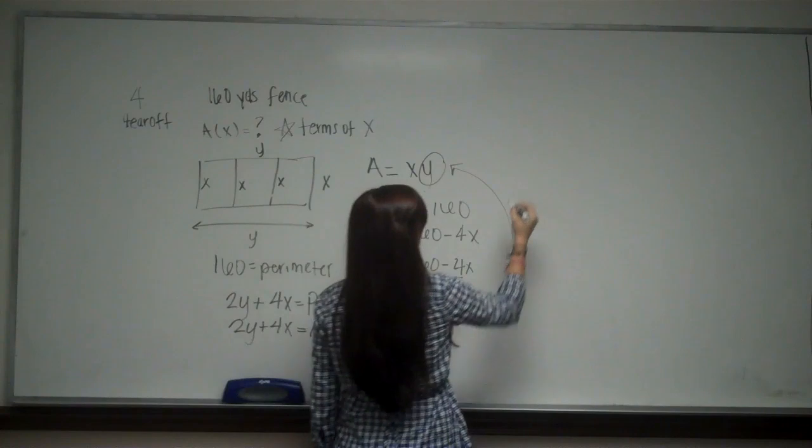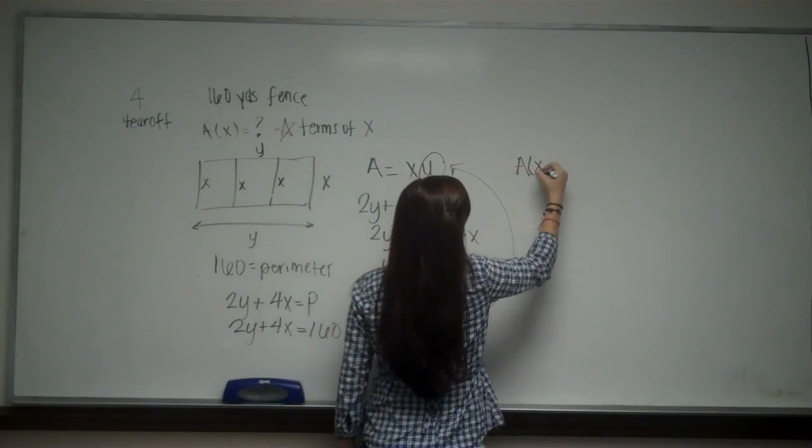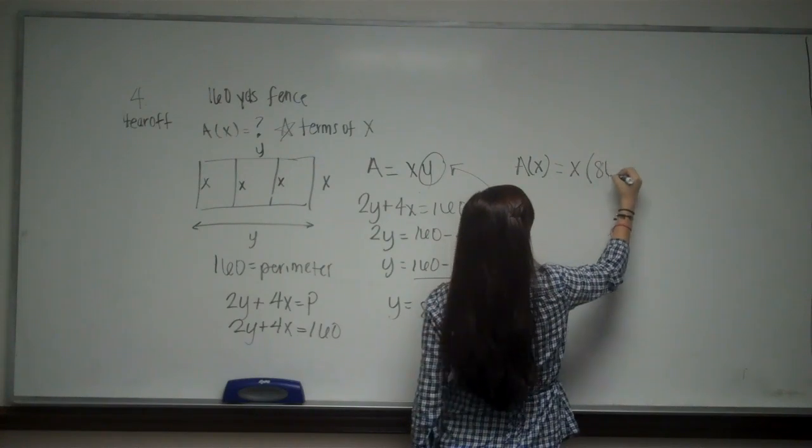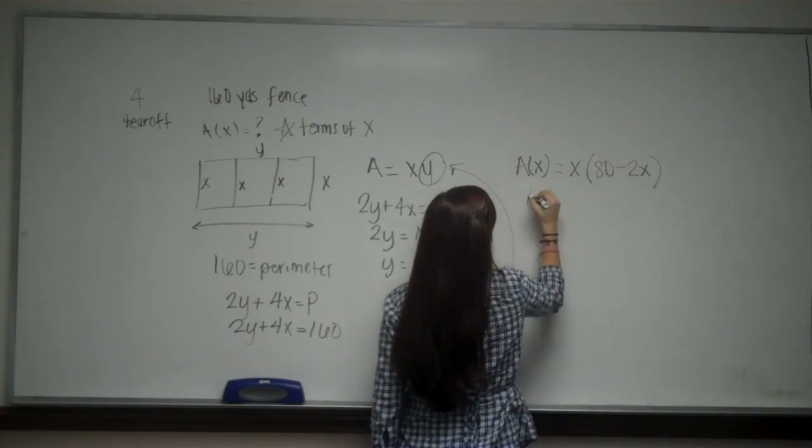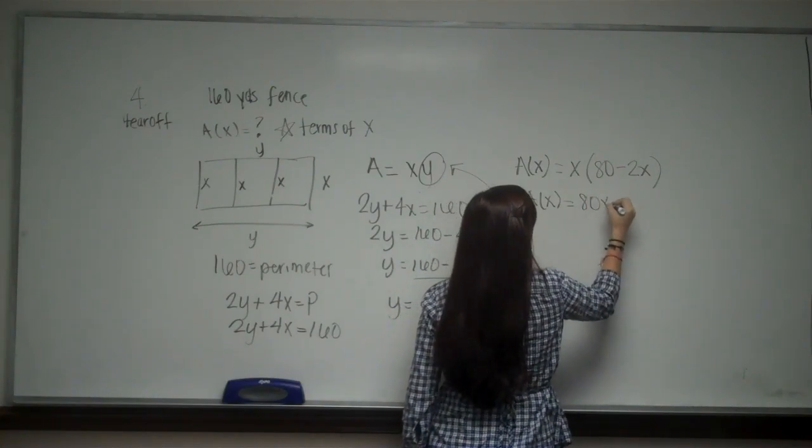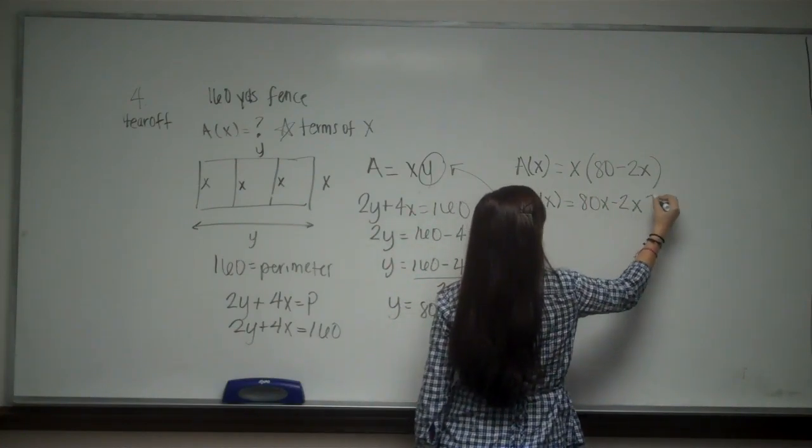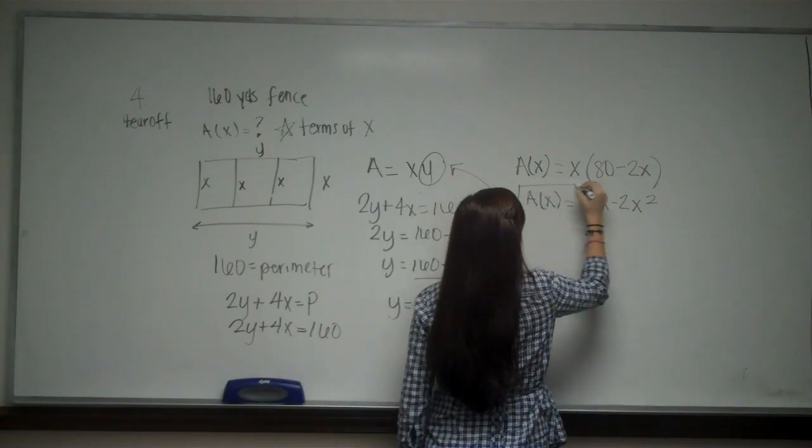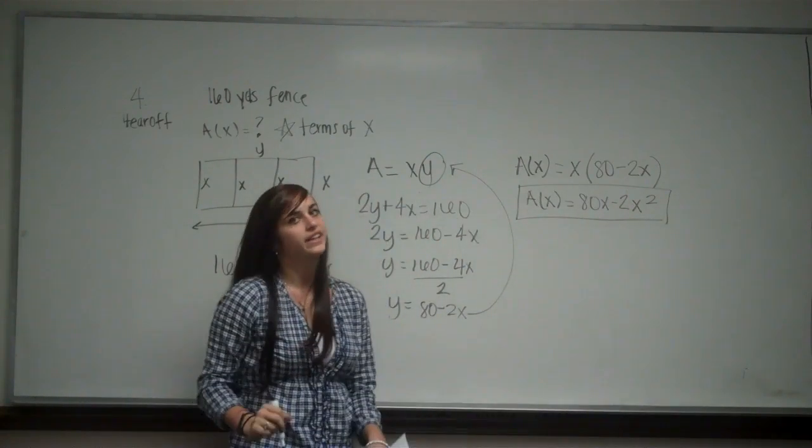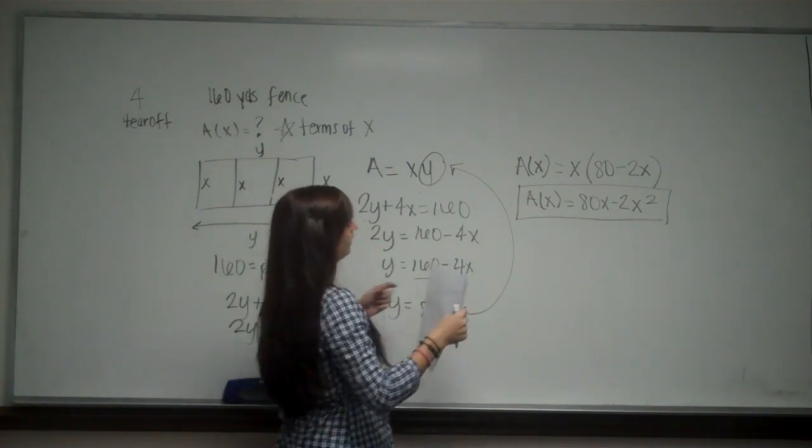So I now have A(x) = x(80 - 2x). So A(x) = 80x - 2x². And that is your equation for area in terms of x. Now they say find the domain.